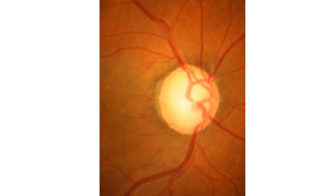If neuro-retinal rim is lost, a cilio-retinal vessel may also appear bared, which is termed baring of cilio-retinal vessel.